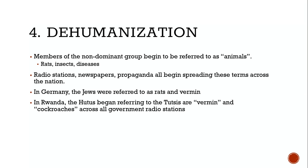Why do we dehumanize somebody? You move someone from being a human — somebody like you — to a lower status. If you see a cockroach run across your kitchen floor, you want to step on it and kill it. By dehumanizing individuals, it makes it easier to believe they are not like you — that us versus them — because they're lesser than human, and you feel obligated to get rid of them.